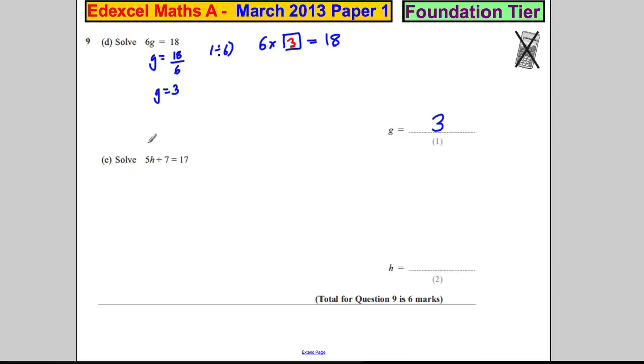Solve 5H + 7 = 17 using the balance method. Do the same thing to both sides. I would subtract 7 from both sides, so 5H is therefore equal to 10 (because 7 take away 7 is nothing, and 17 take away 7 is 10). Then I could divide both sides by 5, so H is therefore equal to 2. Check: 5 times 2 is 10, 10 plus 7 is 17.